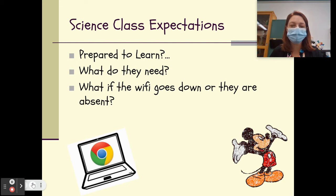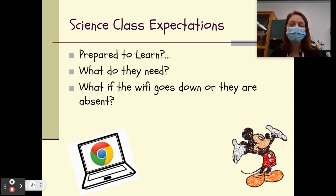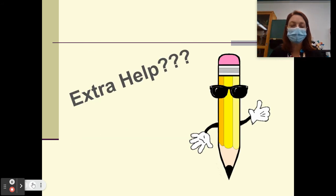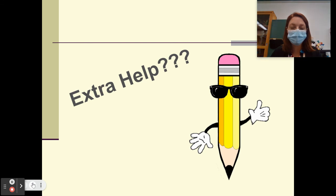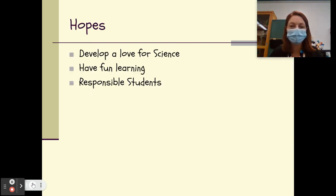What happens if the Wi-Fi goes down or they are absent? In the event that the Wi-Fi goes down, the student or you can email me and let me know. If they're absent, as I mentioned earlier, everything they need will be on Google Classroom. Reaching out to me for extra help or clarification is certainly available to them. Extra help is available potentially during period nine, or they can send me an email and we can compare schedules to make sure they get the extra help they need.